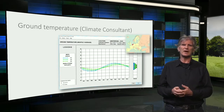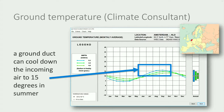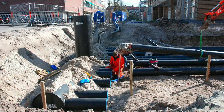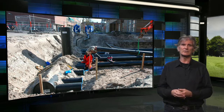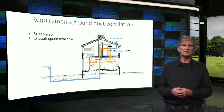Here for instance the graph for the Netherlands. A ground duct is able to warm up the incoming outdoor air to around 5 to 10 degrees in winter. And in summer the incoming air can be cooled down to around 15 degrees, even when the outer temperature is 25 degrees. Here you can see an example of a project for a school, where several parallel ground ducts, with a total length of more than 100 meters, are buried at a depth of 2 meters. It is obvious that this ground duct technology is not feasible everywhere. First, the underground must be suitable to bury the ducts, and there must be enough space to provide enough length for the ducts.